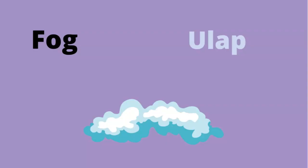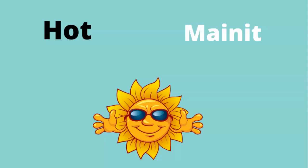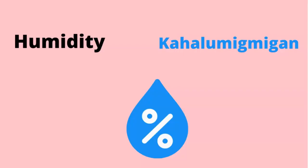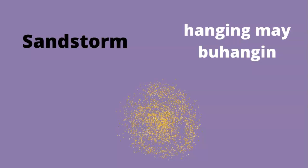Fog — Ulap. Strong winds — Malakas na hangin. Hot — Mainit. Humidity — Kahalumigmigan. Windy — May buhangin.